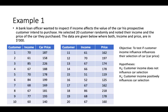Let's take a look at this example. You can pause and input this data in your SPSS. A bank loan officer wanted to inspect if income affects the value of the car that his prospective customers intend to purchase. The objective is to test if customers' income influences their selection of car. The hypothesis would be: 'Customer income does not influence car selection,' and the alternative: 'Customer income positively influences car selection.'